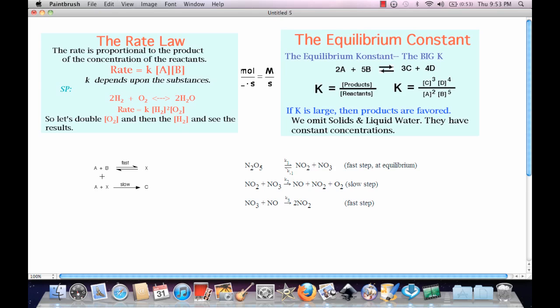Now a fast step is perhaps A plus B is equal to X. But a slow step is kind of like the reverse. So X, you take the product, and you add that to the initial reactant, and you get a slow step, which is a different product C, like this here. You have a fast step.